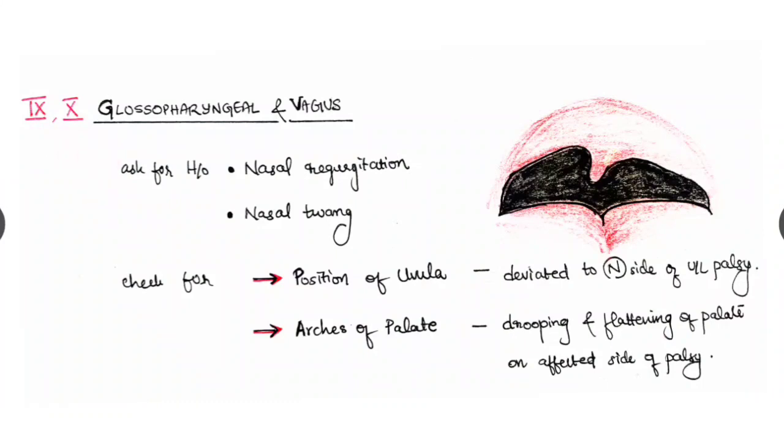Checking for 9 and 10, the glossopharyngeal and the vagus together. Ask for any history of nasal regurgitation or nasal twang. Check for the position of uvula and the arches of the palate. Here this is the uvula and this is the arching of the palate. The uvula normally it is centralized, but it may be deviated to the normal side in case of unilateral palsy. See this is deviated to the normal side.